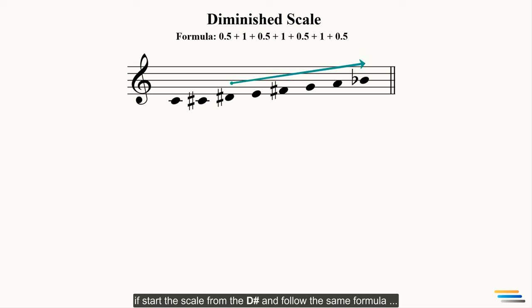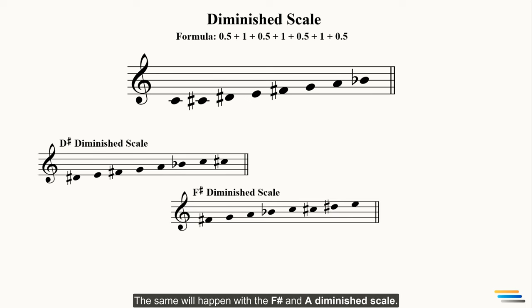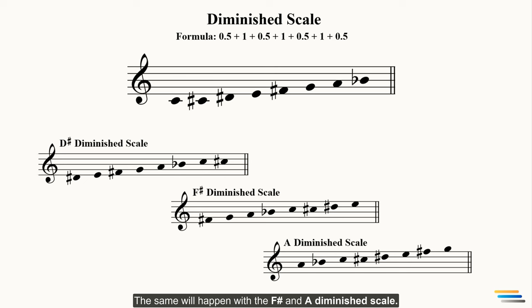If you start the scale from D sharp and follow the same formula, you will get a similar tone progression: D sharp, E, F sharp, G, A, B flat, C and C sharp. The same will happen with the F sharp and the A diminished scale. In conclusion, the C, D sharp, F sharp, and A diminished scales have the same meaning.